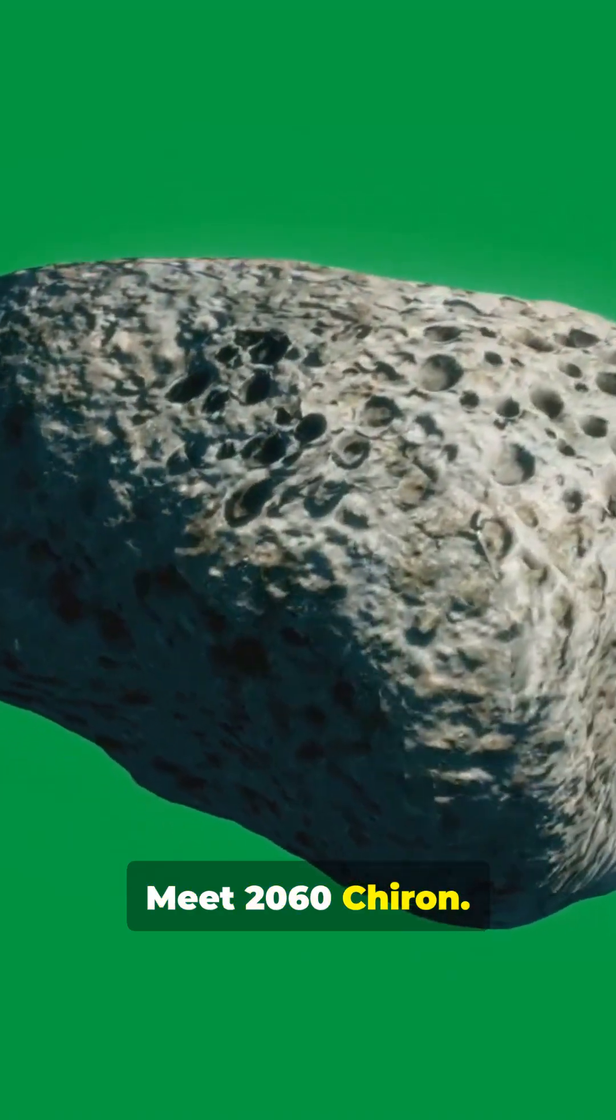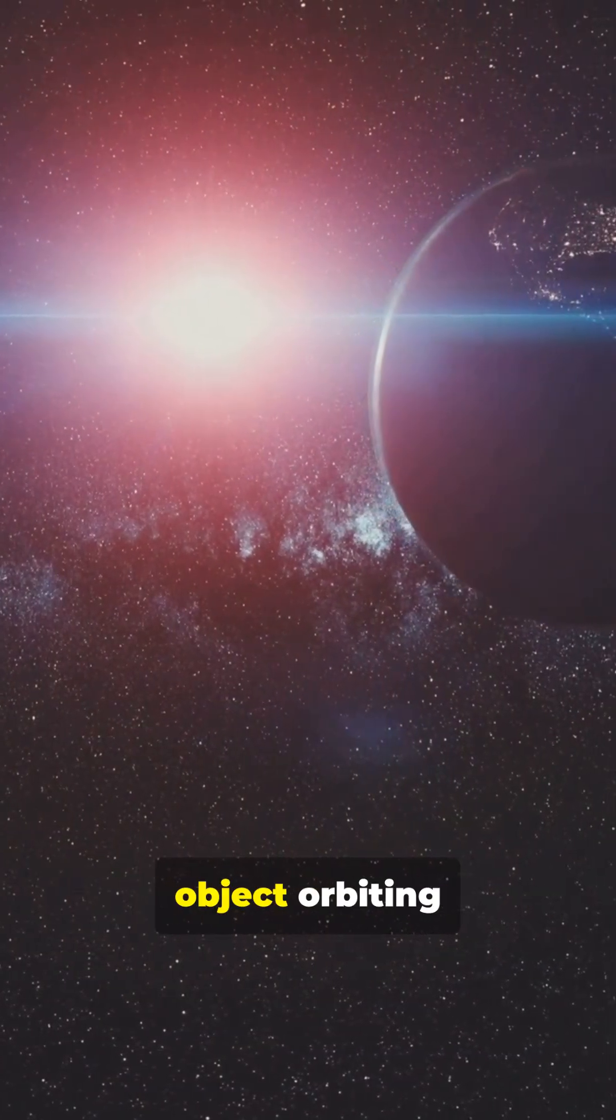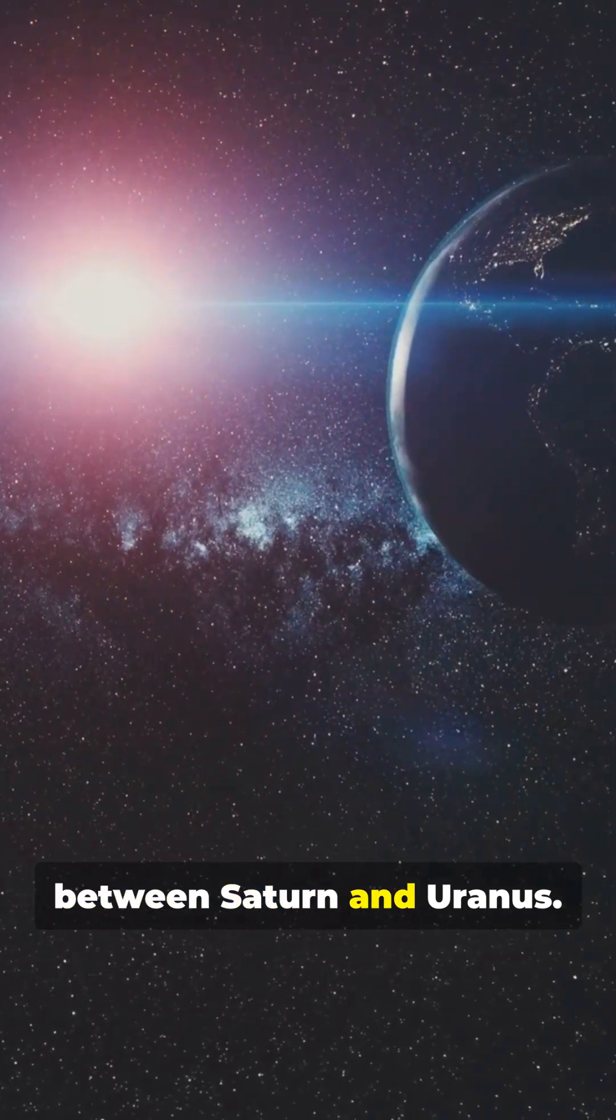Meet 2060 Chiron. Chiron is a strange object orbiting between Saturn and Uranus.